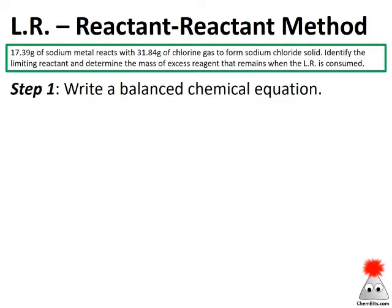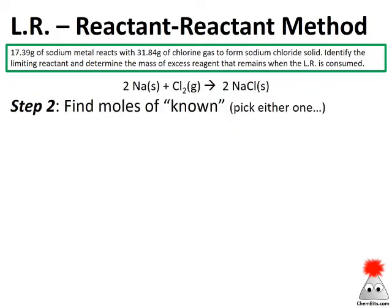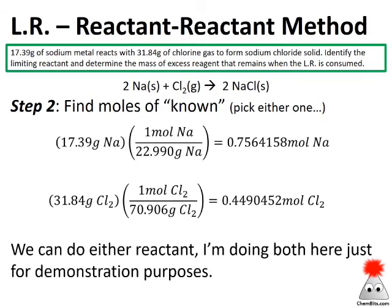Step one: write the balanced equation. We've got sodium solid and chlorine gas reacting to form sodium chloride solid. Remember, chlorine is a diatomic molecule, so this is Cl₂. Because of that, we need a couple of twos to get the balanced chemical equation. Step two: find moles of the known. For a reactant-reactant problem, we can pick either reactant — I'm going to run through both calculations in parallel so you can see what they both look like. Get moles of sodium and moles of chlorine from the information in the problem.